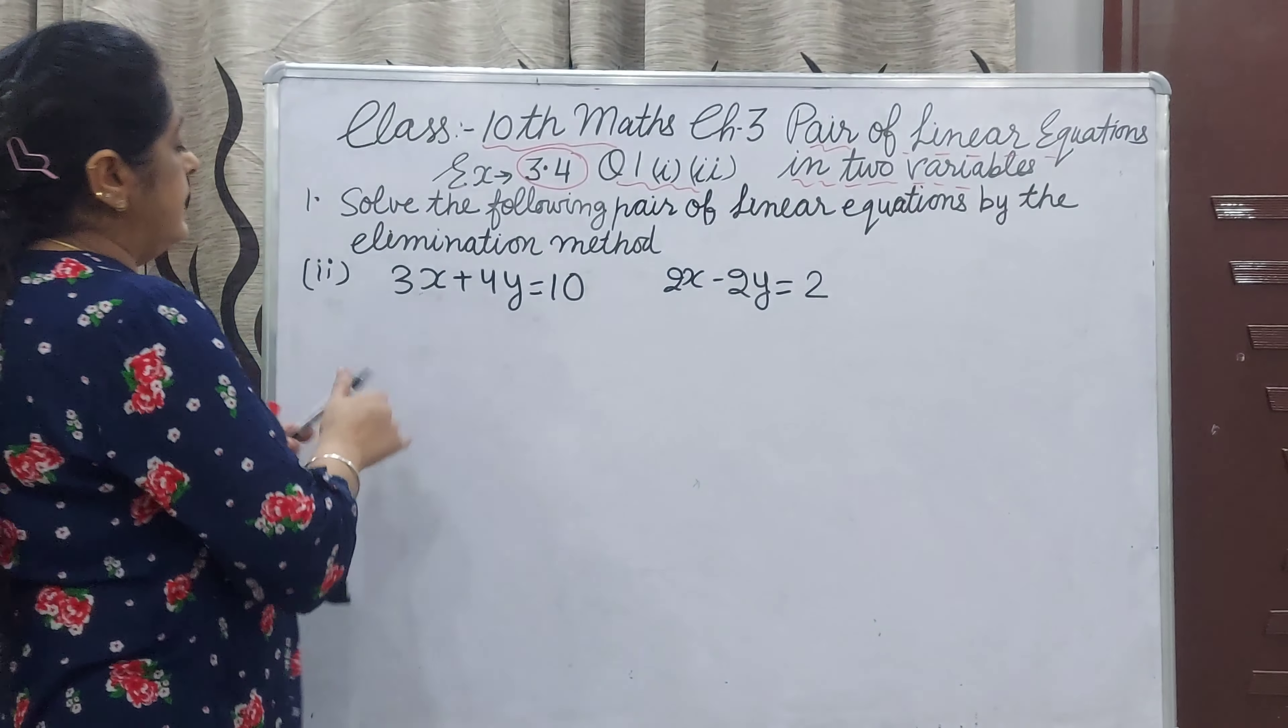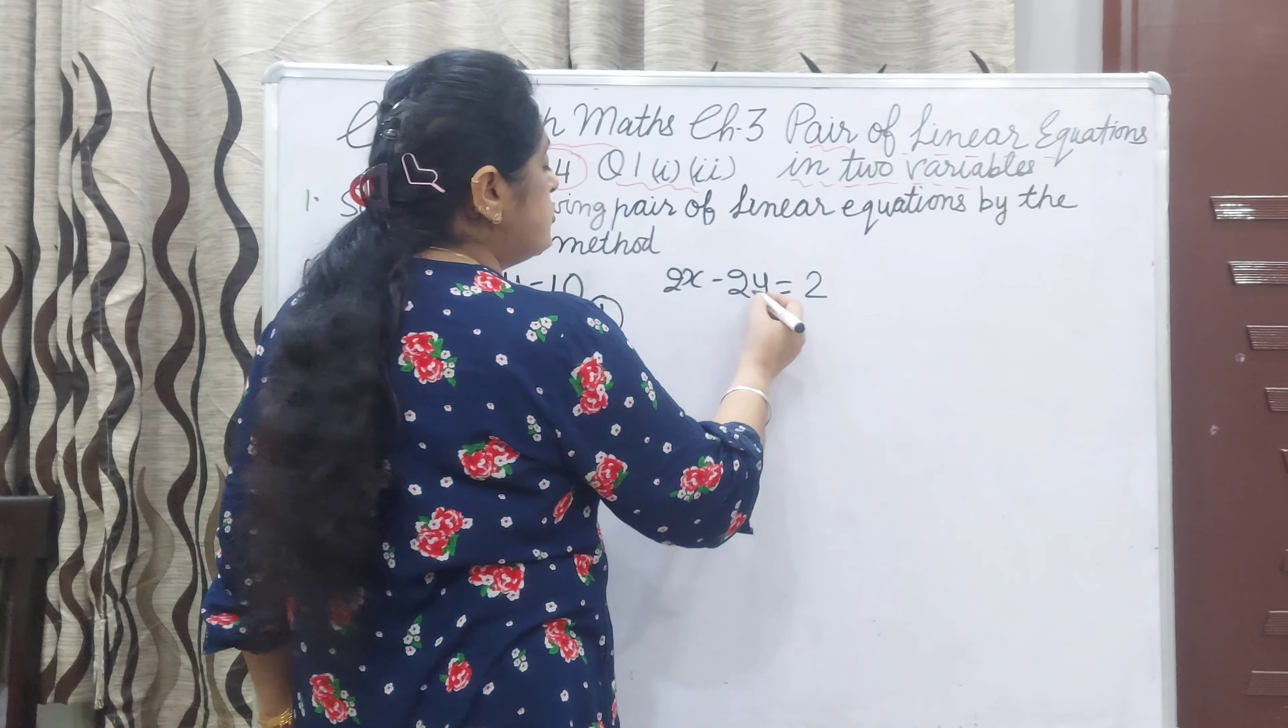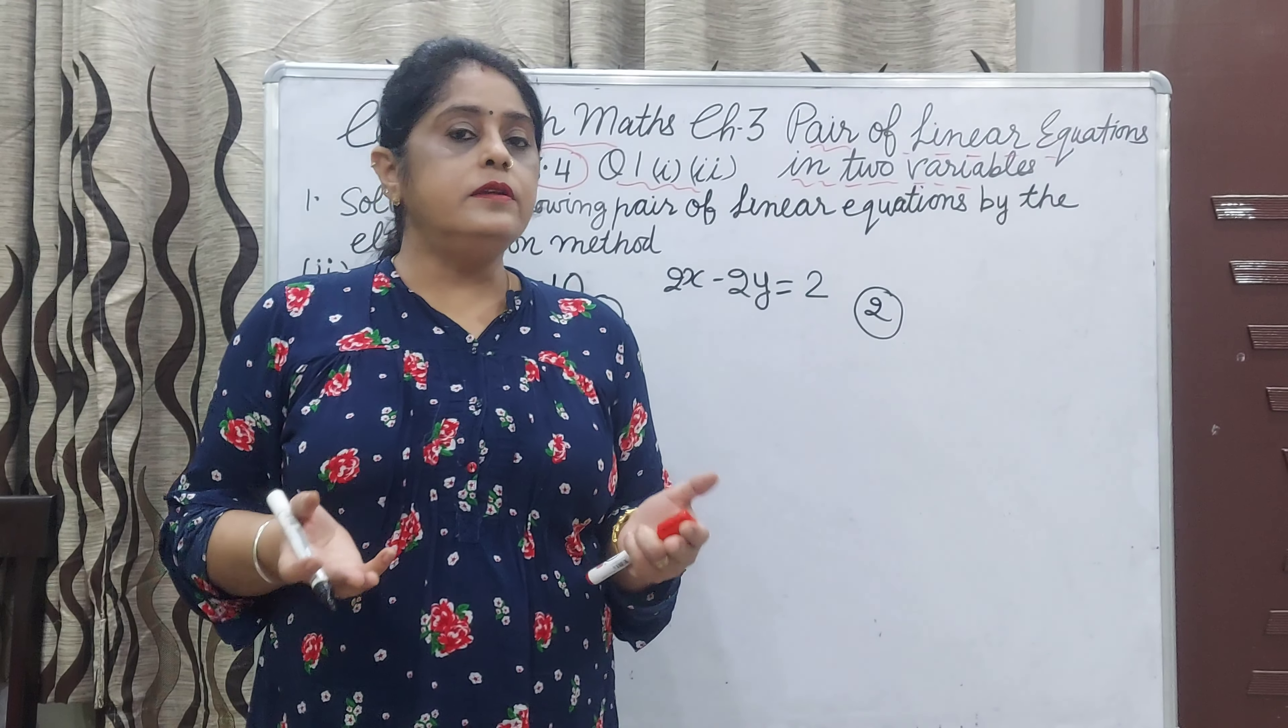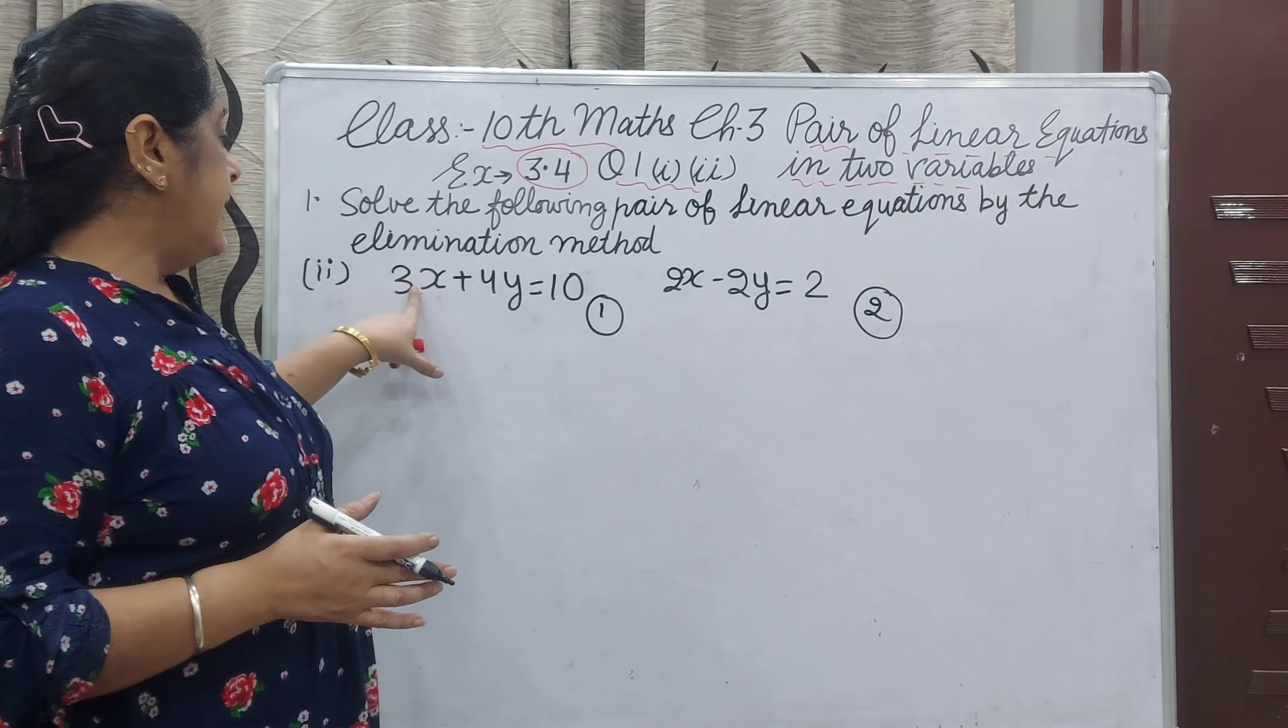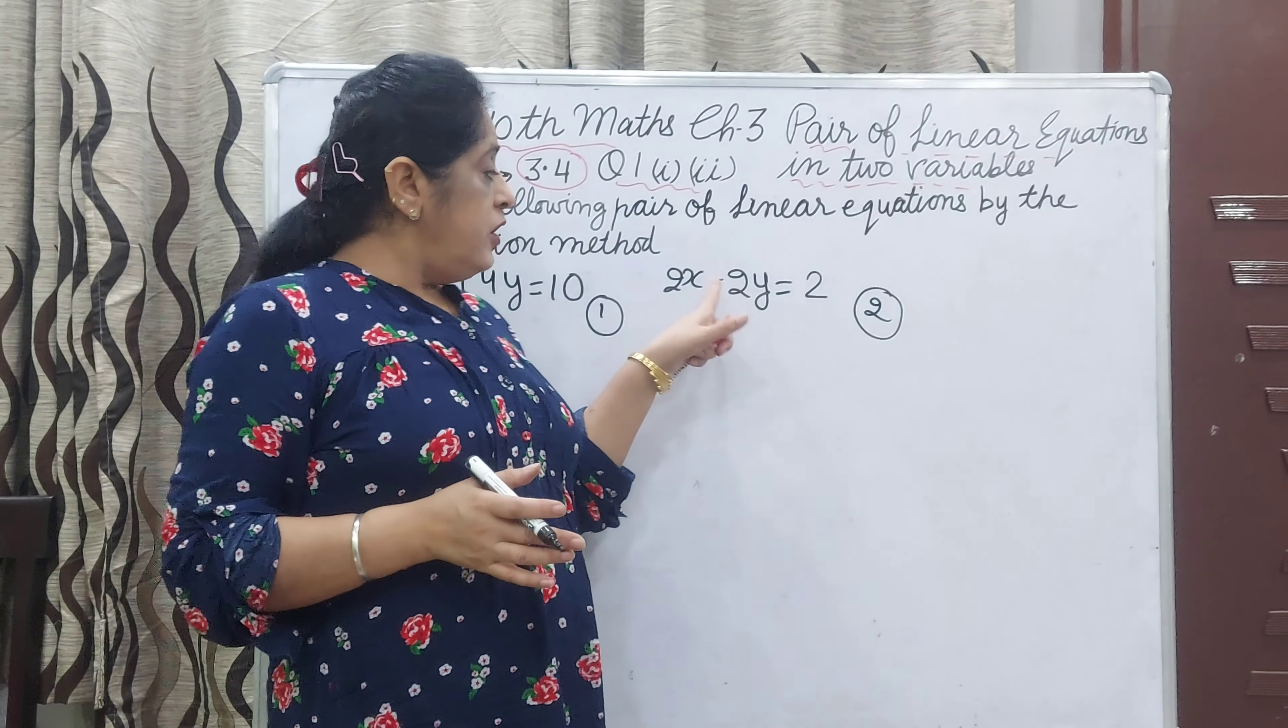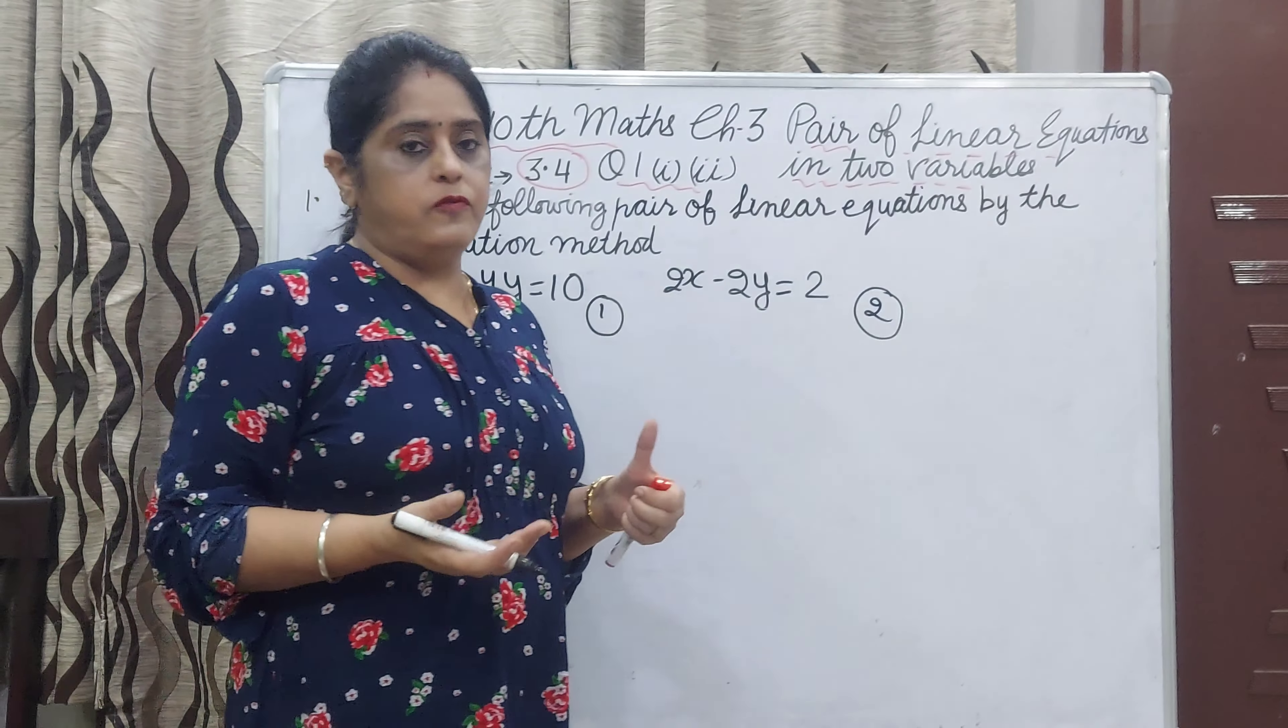Second part: first equation is 3x plus 4y equal to 10, and second equation is 2x minus 2y equal to 2. Either you can eliminate x or you eliminate y. Check: here x is 3, here x is 2. Here y is 4 and here y is 2. If we multiply by 2 this whole equation, here y will be 4, equal to this 4y, and then we can eliminate y.